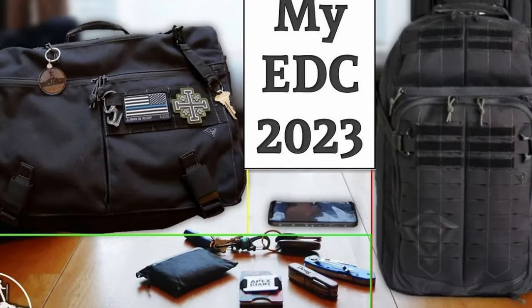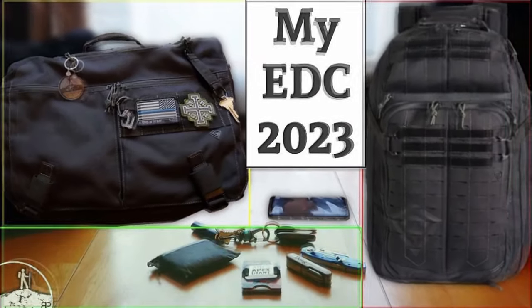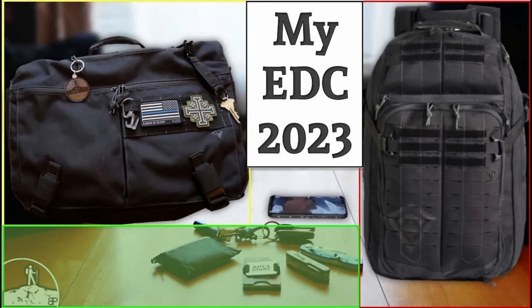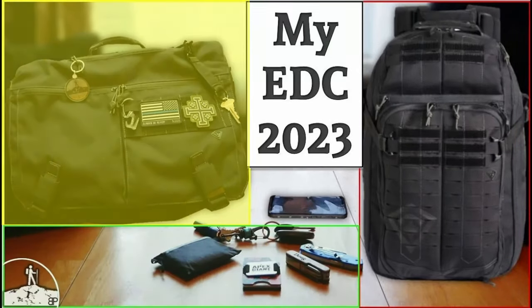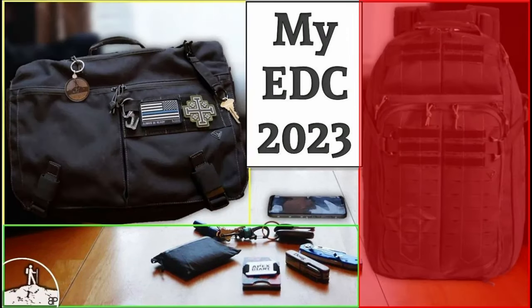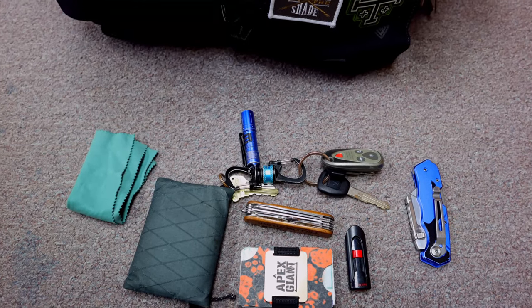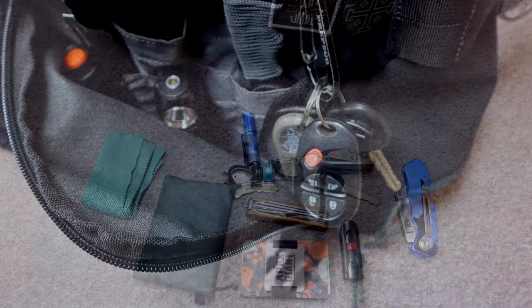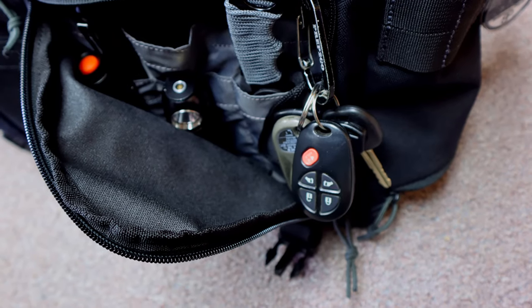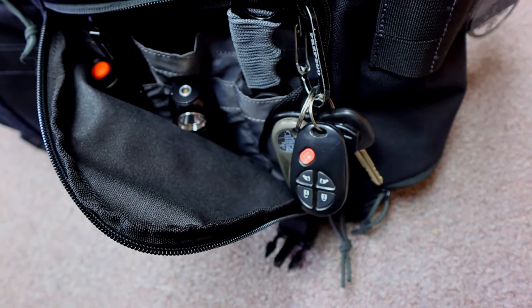Some time ago, I did a video on my everyday carry and I mentioned that I use kind of a layering system - categories of usefulness, how often I need to get to them, and how quick I need to get to them depending on what the situation is. So for some time, I've kept the gear that I need quick access to in my pockets and then anything that I wanted nearby but not necessarily on my person in the messenger bag.